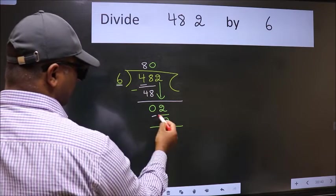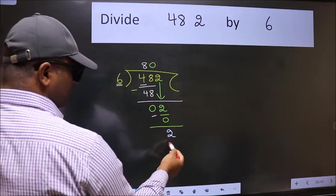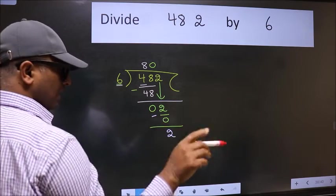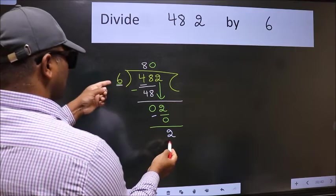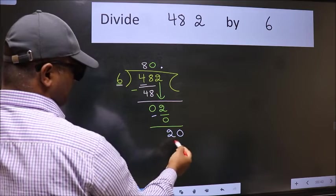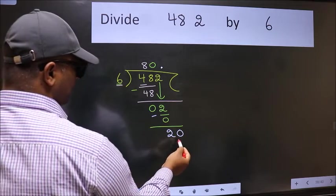Now we subtract, we get zero. Now we subtract, we get two. Over here we did not bring any number down. And 2 is smaller than 6, so now we can put dot and take zero. So 20, a number close to 20 in 6 table is...